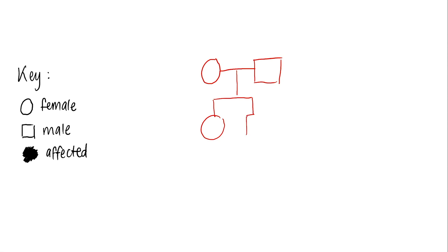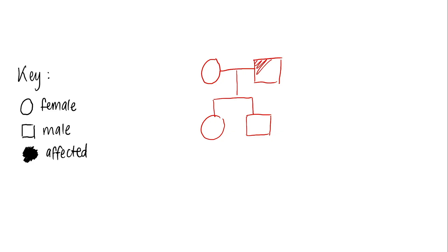This expresses two generations. Any affected individuals — those who carry the phenotypic trait we're looking for — will be coloured in. For example here, the father has been affected by this trait, and so has his daughter.